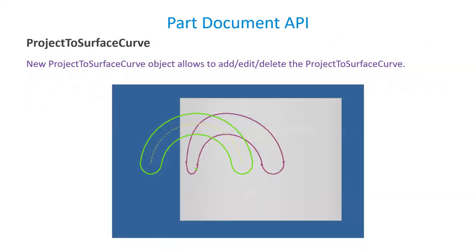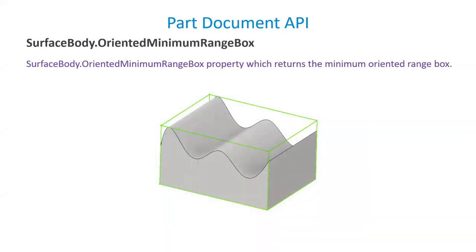In 3D Sketch, a new Project To Surface Curve object is implemented to project the curve onto a surface. This object also allows editing and deleting the projected curve. Additionally, you can now get the range box of a surface body — earlier this was only available for a Part Body, Component Occurrence, or Assembly. Now it is exposed for surface bodies as well.